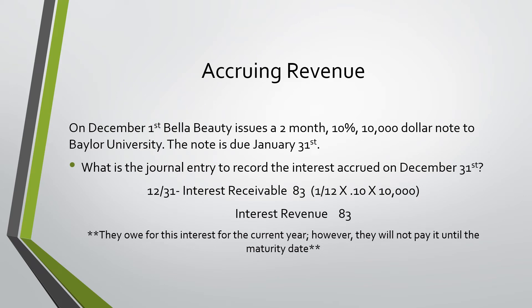Next, what is the journal entry to record the interest accrued on December 31st? We would debit interest receivable of eighty-three dollars and credit interest revenue of eighty-three dollars. While it is a ten percent note, we know that that's an annual interest rate. So what I did was I took one divided by twelve for one month out of the twelve months of the year, multiplied that by ten percent, and then finally by the ten thousand.